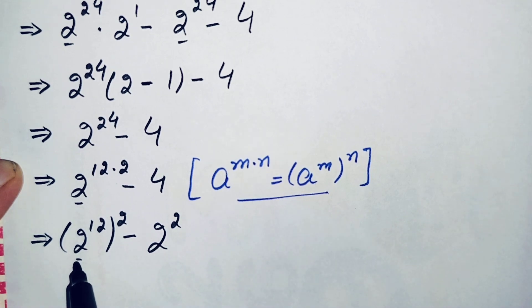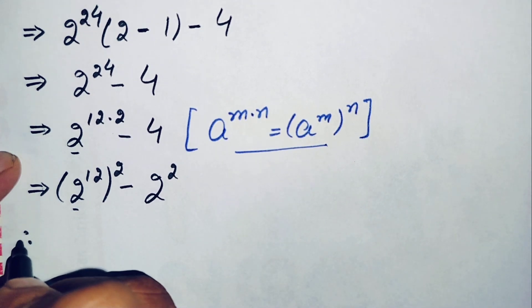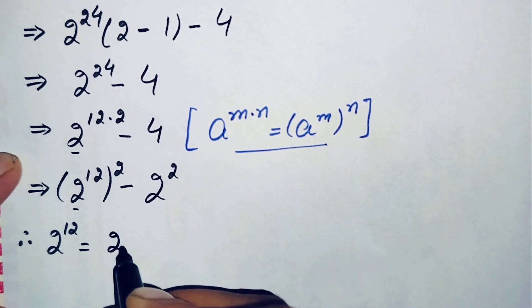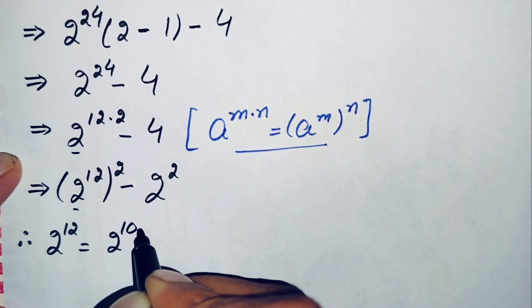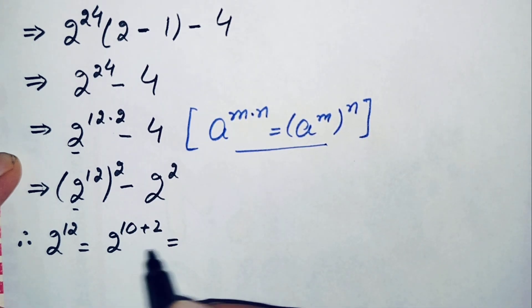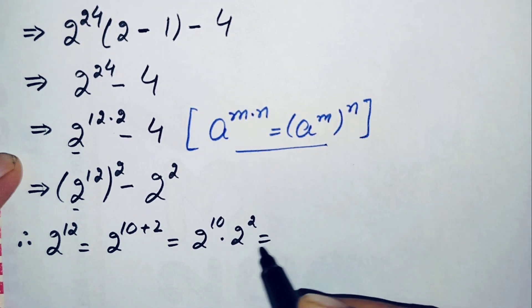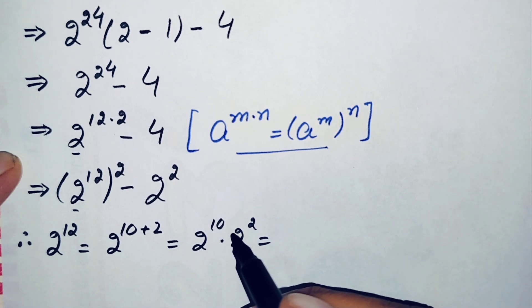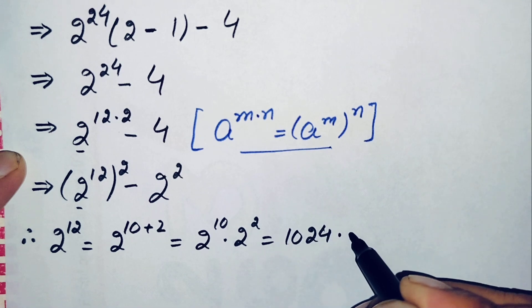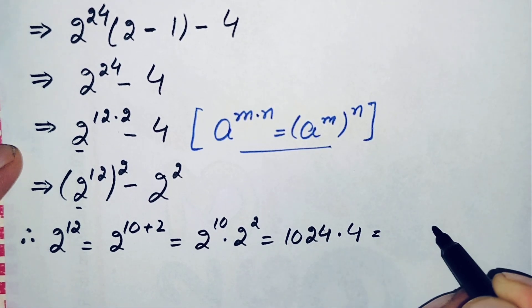Now we need to find the value of 2 raised to power 12. We can write 2 raised to power 12 as 2 raised to power 10 plus 2, which gives us 2 raised to power 10 times 2 raised to power 2. Now 2 raised to power 10 is the very famous number 1024.